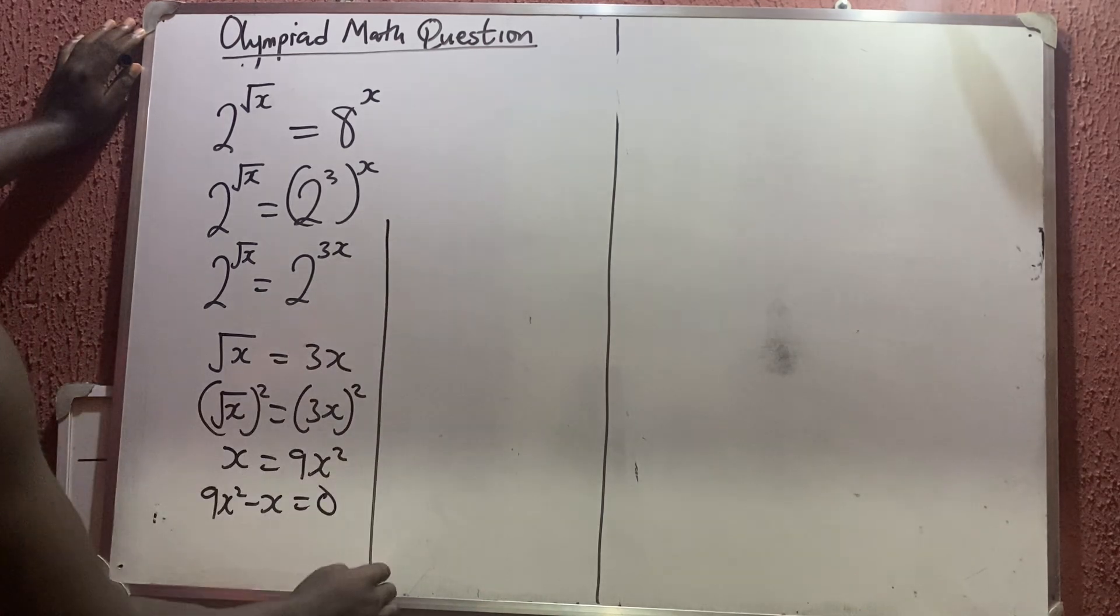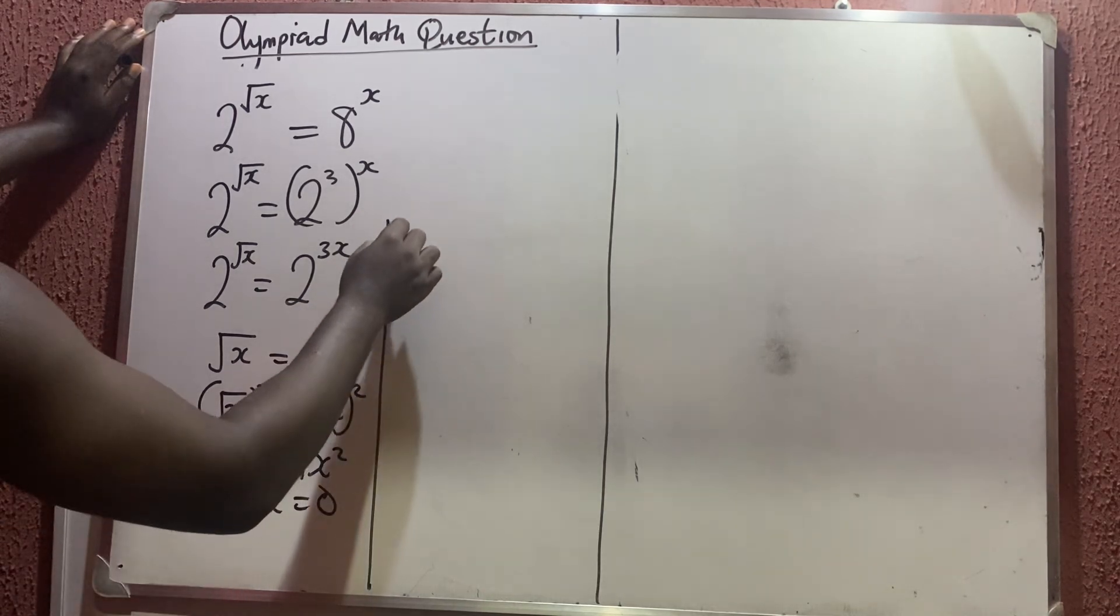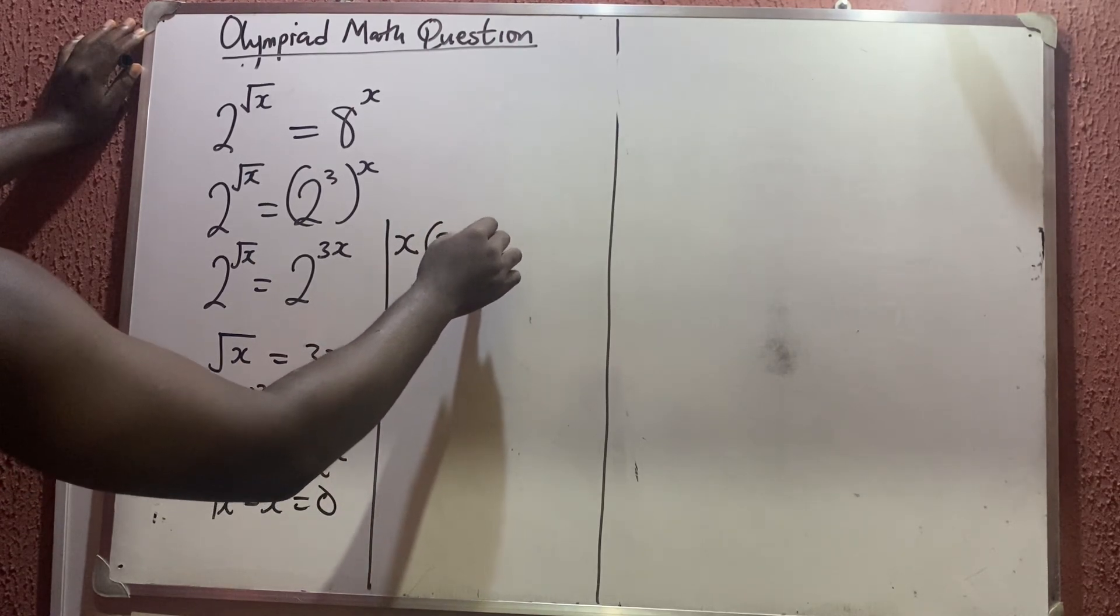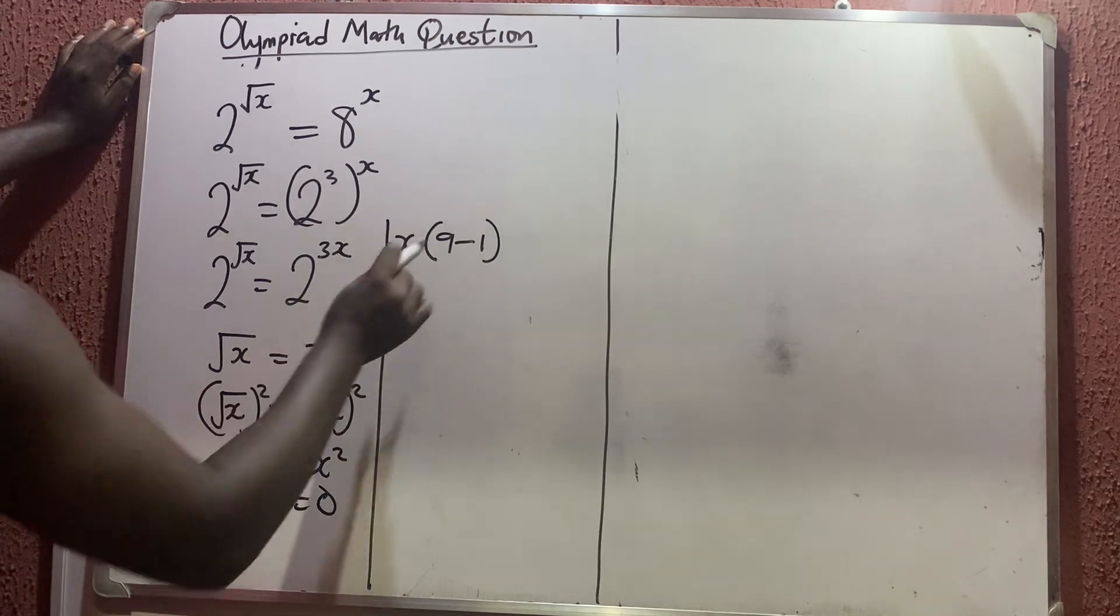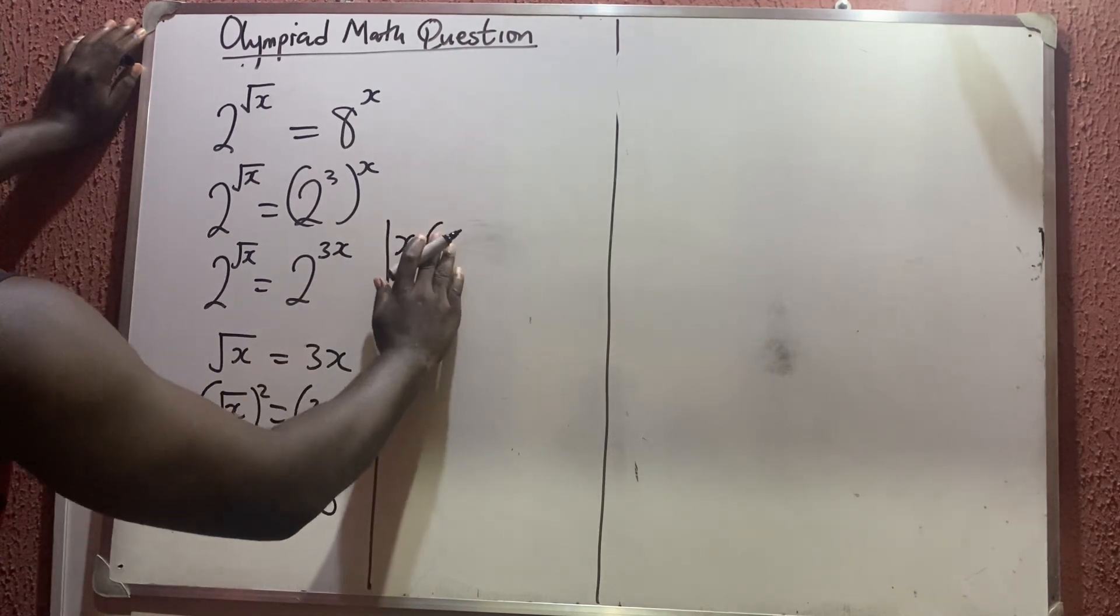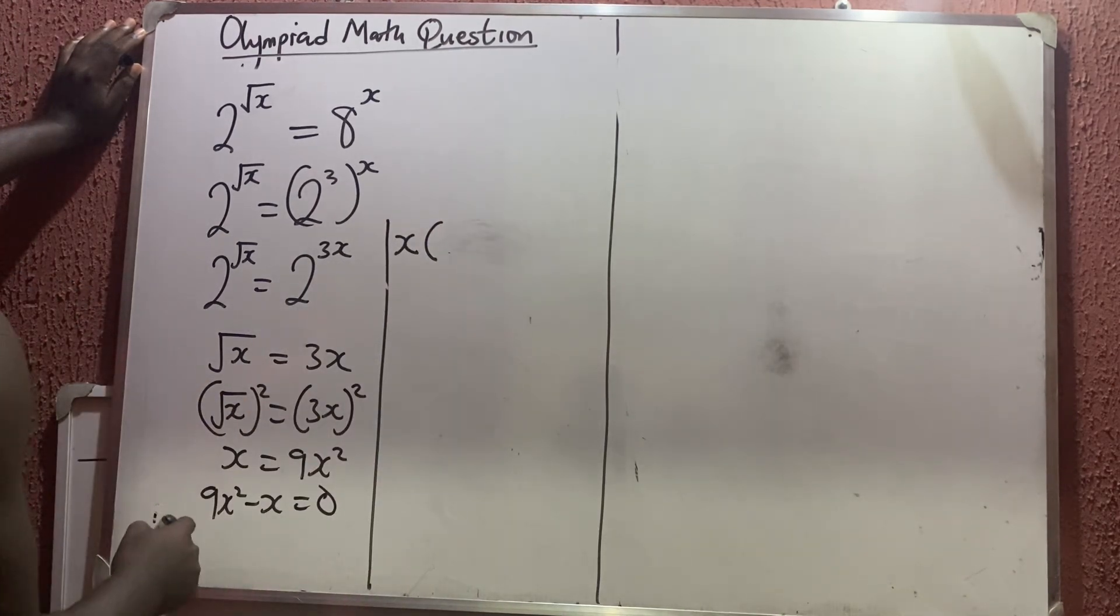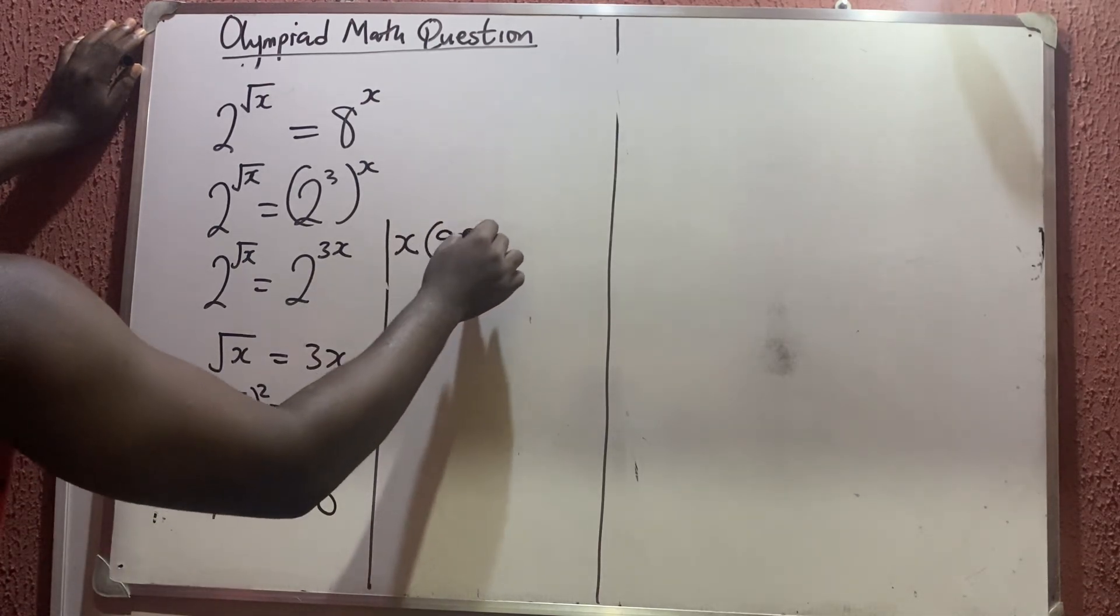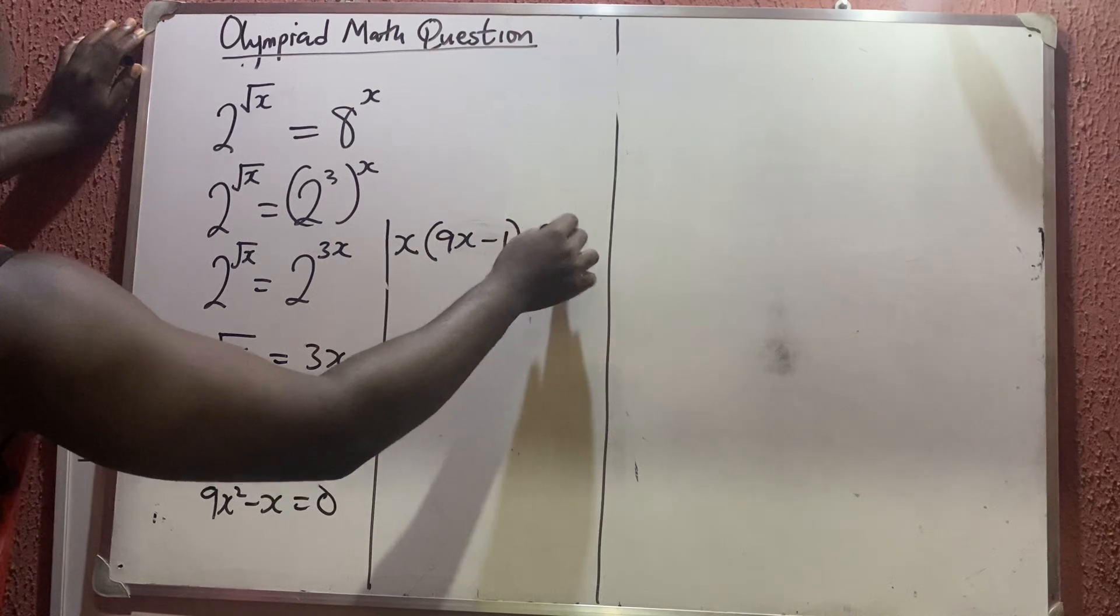So if we decide to factor out the x they have in common, I'm having an x in bracket of, sorry, 9x. Bring out x they have in common, I'm going to have that this is 9x minus 1 is equal to 0.